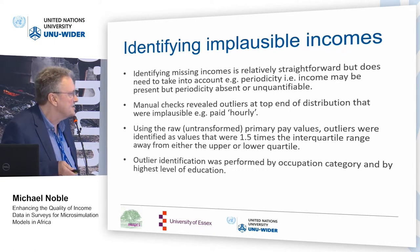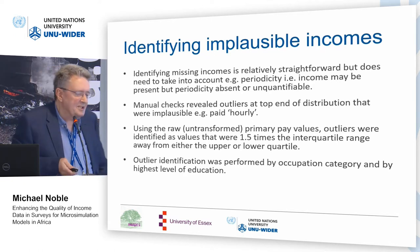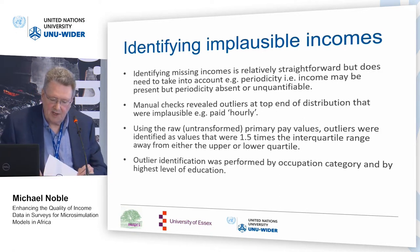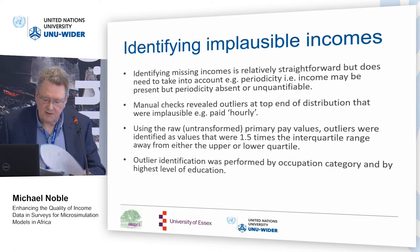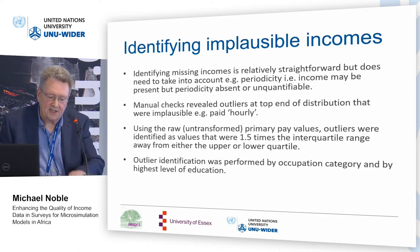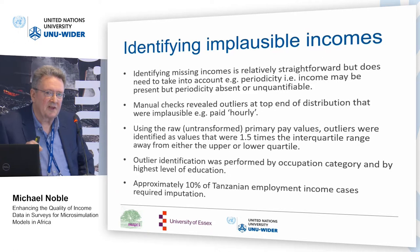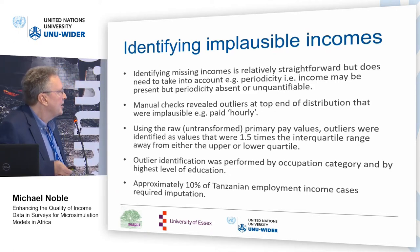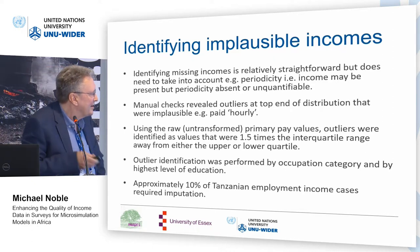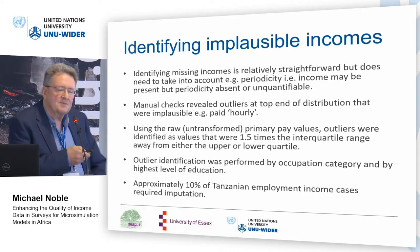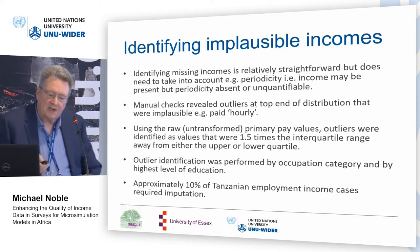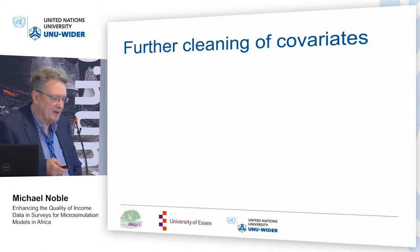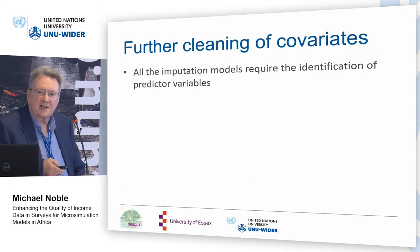We were able to set those outliers as missing, in addition to the missings otherwise identified. Outlier identification was done both by occupational class and by highest educational status attained — both of which were very good predictors of income. In Tanzania, approximately 10% of employment income was either missing or set to missing as implausible.